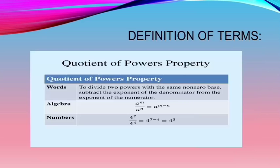We have here the definition of terms — quotient of powers property. To divide two powers with the same non-zero base, subtract the exponent of the denominator from the exponent of the numerator. For example, a to the power of n divided by a to the power of n equals a to the power of m minus n. Or, 4 to the power of 7 over 4 to the power of 4 equals 4 to the power of 7 minus 4, which equals 4 to the power of 3, or 4 cubed.